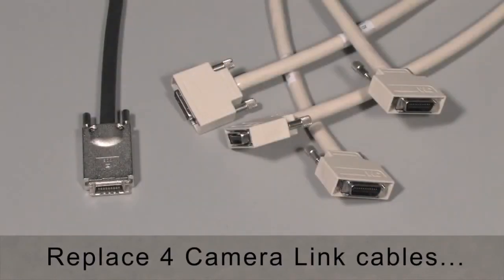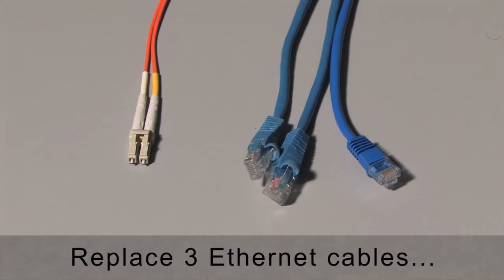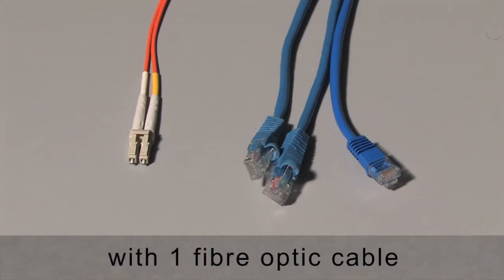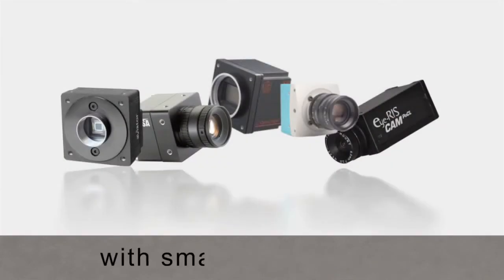CameraLink HS replaces four CameraLink cables with one CameraLink HS cable. It can take three gigi cables and replace them with one fiber optic connection. Or if you prefer copper, we are planning a FlexLife rated coax solution with power on the cable, enabling the ultra-small camera.